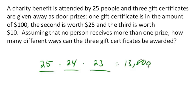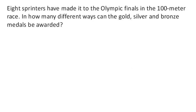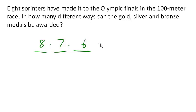You'll notice this looks like our factorial computation but truncated — we don't go all the way down to one. Eight sprinters have made it to the Olympic 100-meter finals. How many different ways could the gold, silver, and bronze be awarded? There are 8 possibilities for first place, 7 for silver, and 6 for bronze, giving a total of 336 different outcomes.